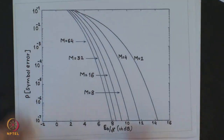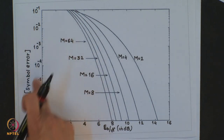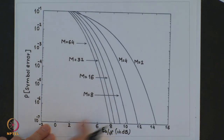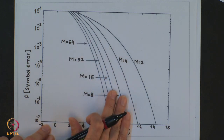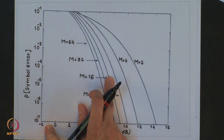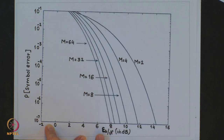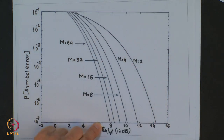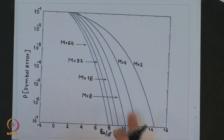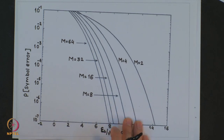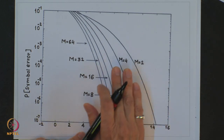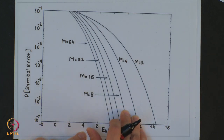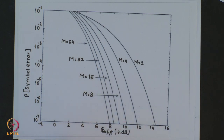This figure shows the exact symbol error probability of M-ary FSK as a function of SNR per bit for different values of M. Notice the completely opposite behavior compared to M-ary ASK, M-ary PSK, and M-ary QAM: the required SNR per bit to achieve a given error probability decreases as M increases in M-ary FSK. For a given SNR per bit, as M increases, the symbol error probability keeps decreasing — but this happens at the expense of larger transmission bandwidth to accommodate more orthogonal carriers.